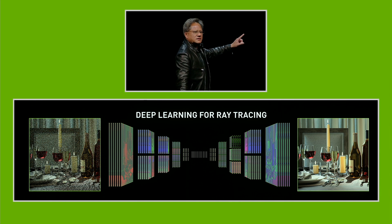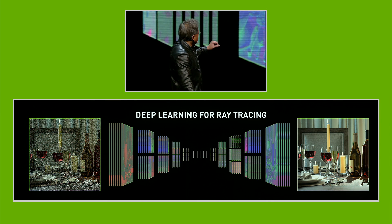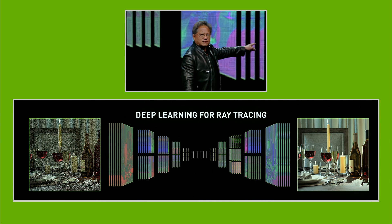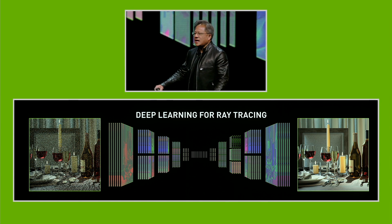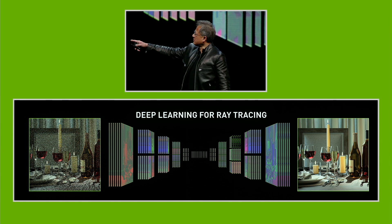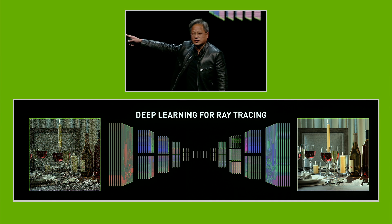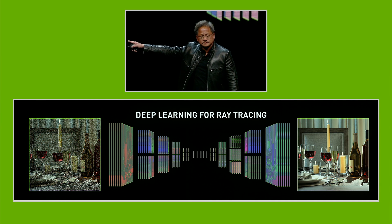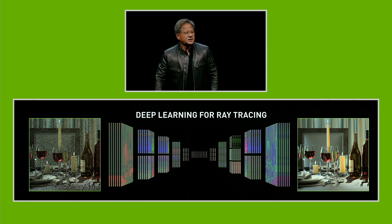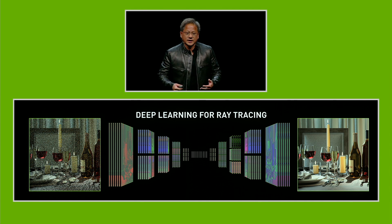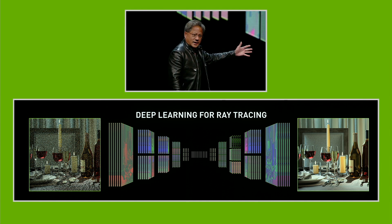We're asking this network: if we gave it a distorted image — a noisy image — it has to learn how to generate the beautiful image from that noisy image. The way that it has to do that, it has to figure out how to recognize the important features and eventually generate it automatically.